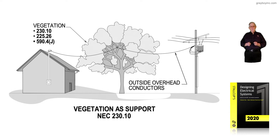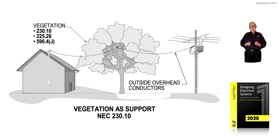When they first brought this rule into the code, they said 'live vegetation.' So folks said, well, if they're dead trees, we can support to those because they're not live and we haven't gone against what the code is saying. See how misinterpretations can be made.